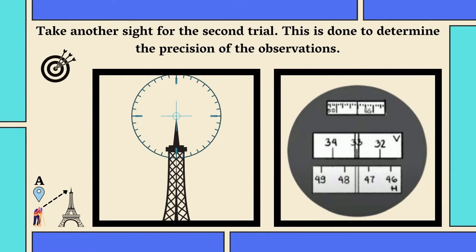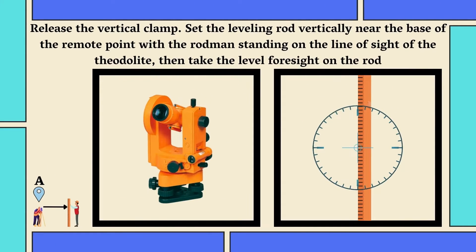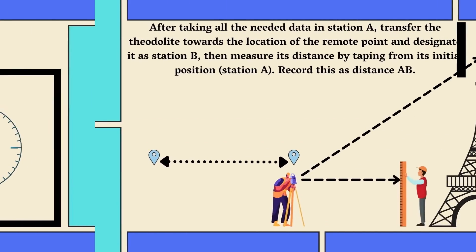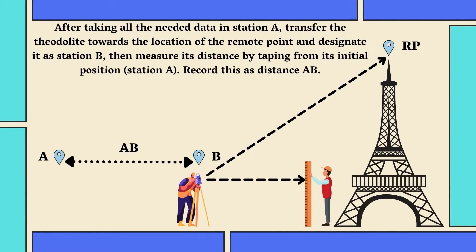Then, take another sight for the second trial. This is done to determine the precision of the observations. Calculate the mean of the two vertical angles or the angle of elevation of the specified point from the first station. After this, release the vertical clamp. Set the leveling rod vertically near the base of the remote point with the rodman standing on the line of sight of the theodolite. Then, take the level foresight on the rod to determine the height of the instrument. In here, the reading of the vertical angles should be zero.